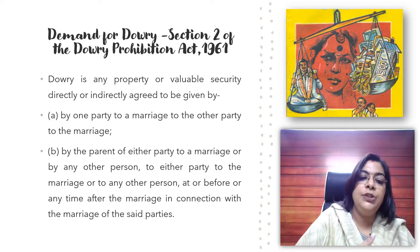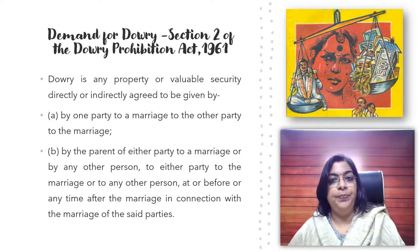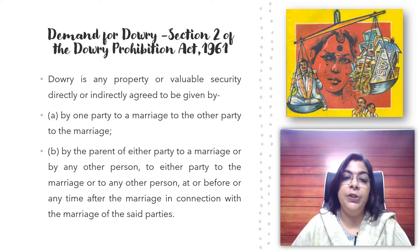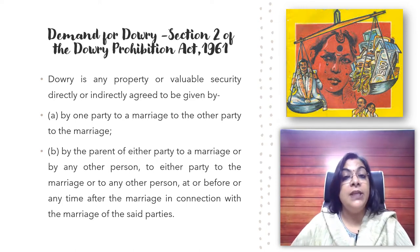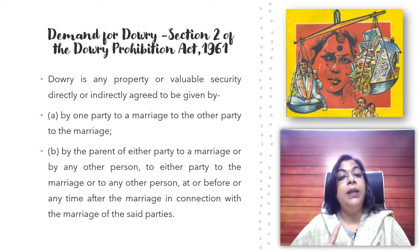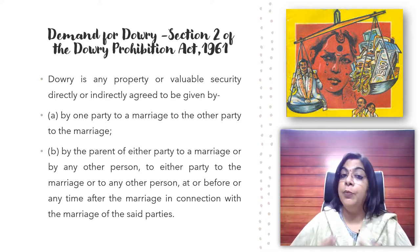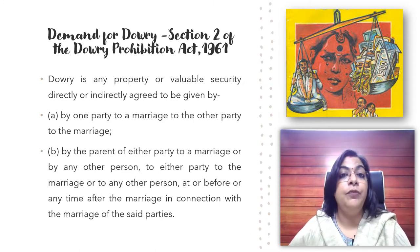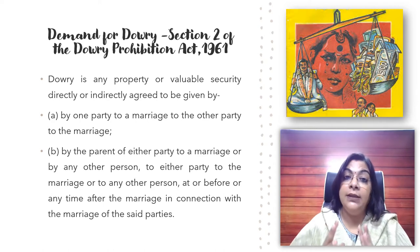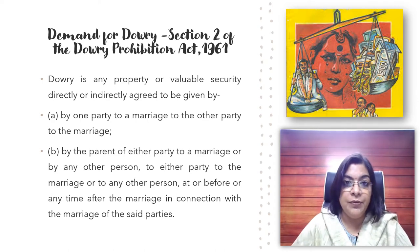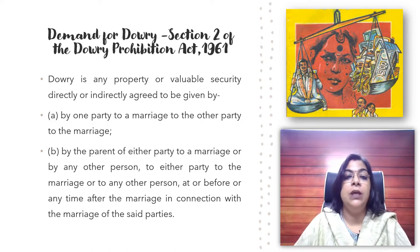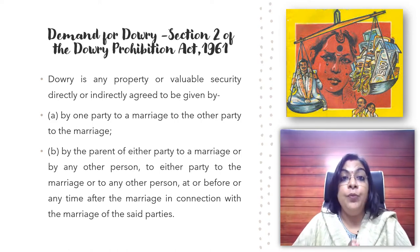Furthermore, dowry includes anything given by the parents of one party to the marriage to the other party, or to any other person, at or before or any time after the marriage, in connection with the marriage of the said parties. Any valuable thing given at or around the time of marriage — from the bride's side to the bridegroom's parents or relatives — will be considered a demand of dowry under section 2 of the Dowry Prohibition Act, and is an offense.